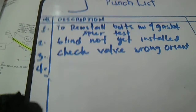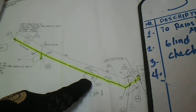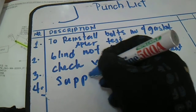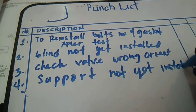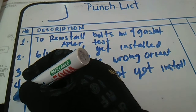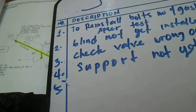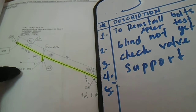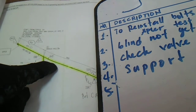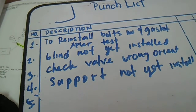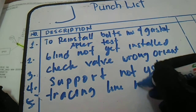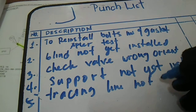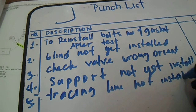Number four: we have a support here — support not yet installed. This is a welded type support, and there is a pipe shoe and guide also. Number five: we have a tracing line here — this dotted line is a tracing line — and the comment is tracing line not yet installed, to be installed after test.